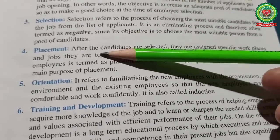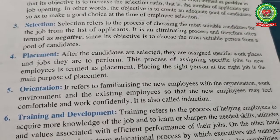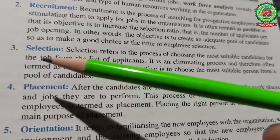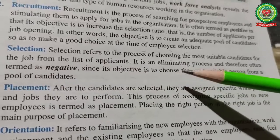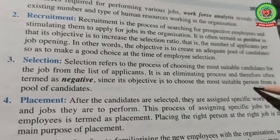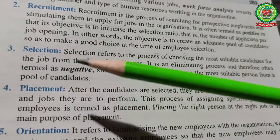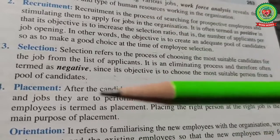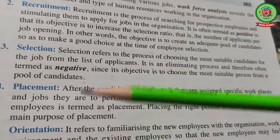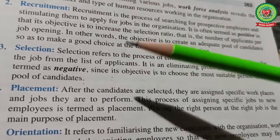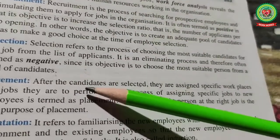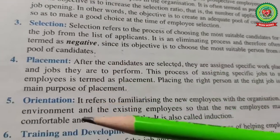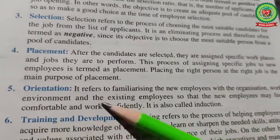The next step is selection, which is a negative process. Selection refers to choosing the most suitable candidates for the job from the list of applicants. It is termed as negative because applicants are also being rejected — only the best one is selected. Recruitment is positive because you accept all applications; selection is negative because the objective is to choose the most suitable person from the pool of candidates.